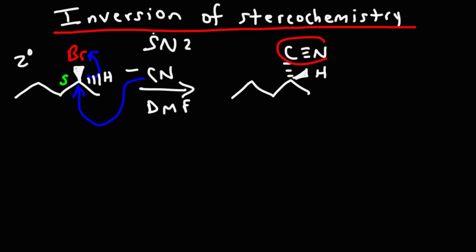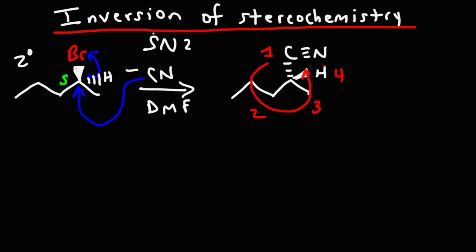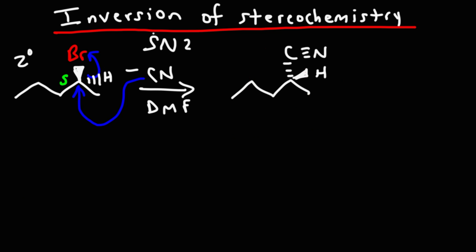Now the nitrile group will have the highest priority, so this will be number one. Propyl will be group number two, methyl will be group number three, and H is in the front. So one to two to three gives us S, but because H is in the front we need to reverse it to put it in the back — so that gives us R. The configuration at the chiral center changed from S to R; you could say it was inverted from S to R. That's a good example of inversion of stereochemistry.